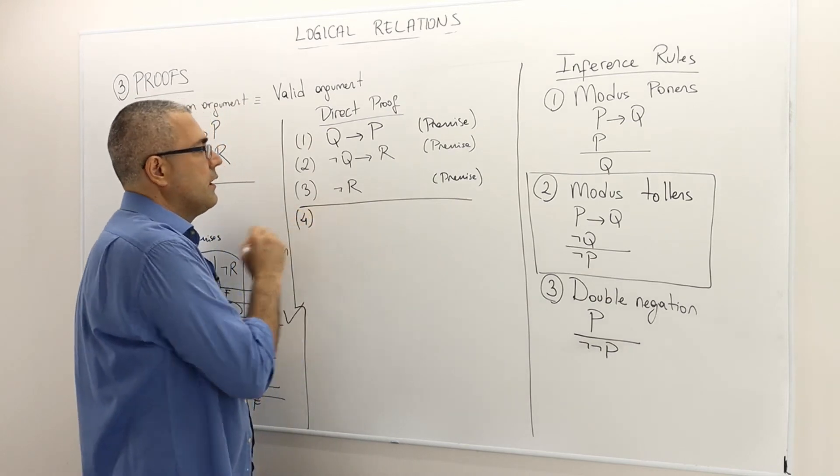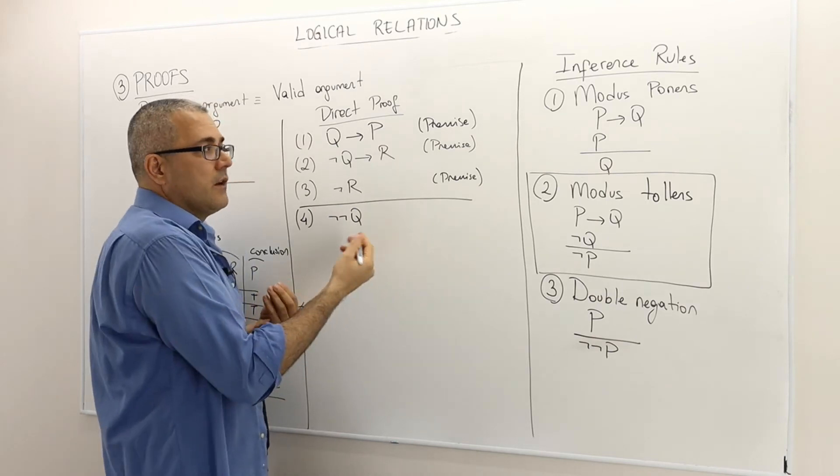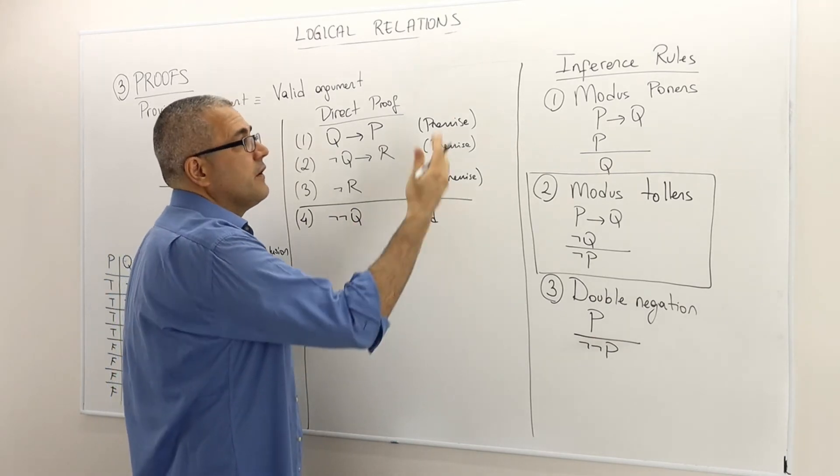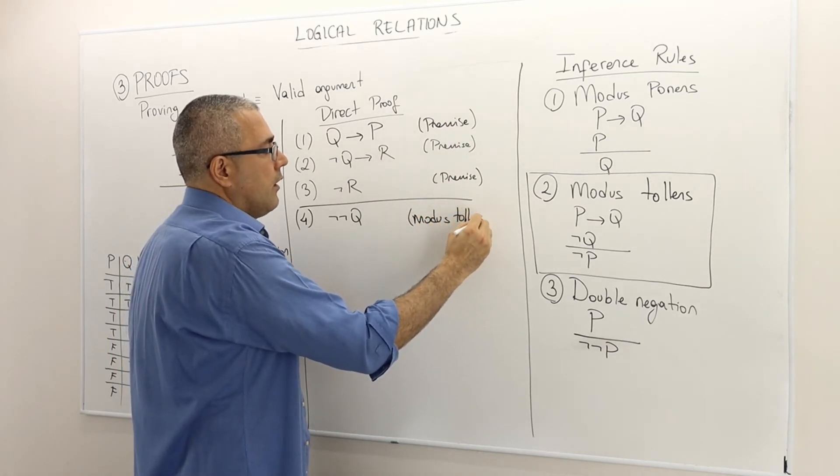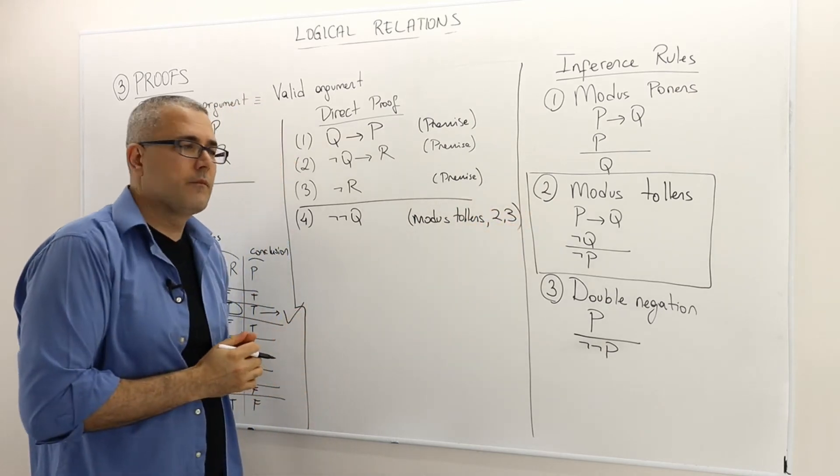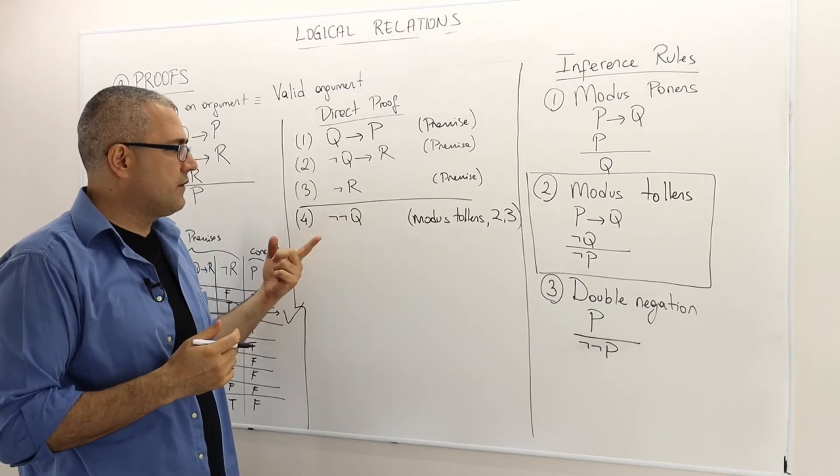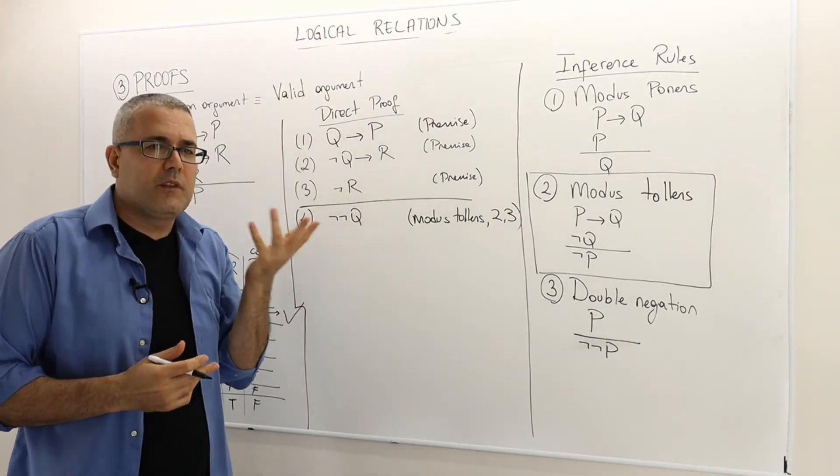So I'm going to name this number four, not not Q. And it's a conclusion of this inference rule modus tollens of premise number two and three. So once I have not not Q, what else? So now I have kind of four premises. Think it that way. So I can use all those fours.